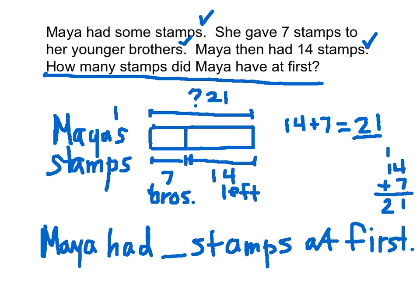So we can put — let's go back to our question. Maya had blank stamps at first. Maya had 21 stamps at first. And that is how we found our answer to this problem.